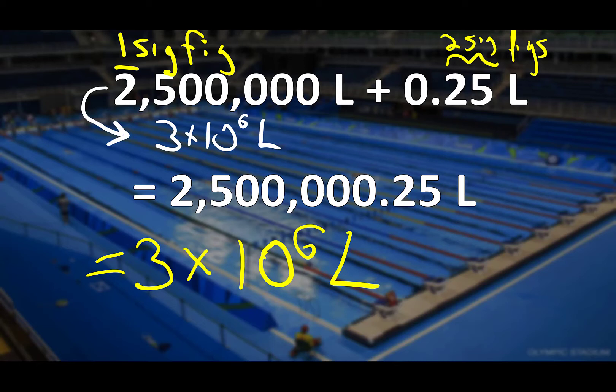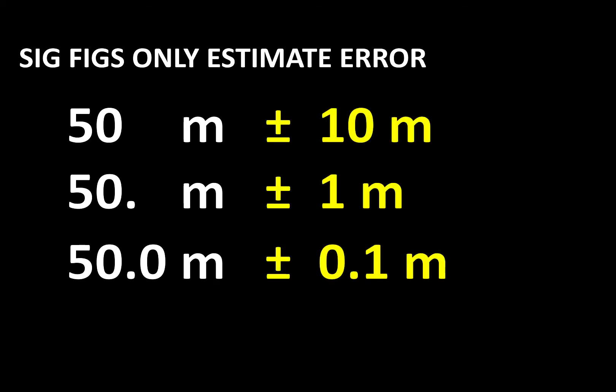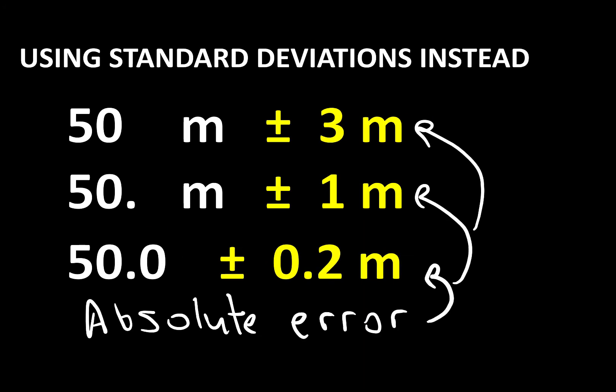Significant figures are just one way of expressing the error in a measurement. What a significant figure is really doing is expressing error like a standard deviation — the number always assumes plus or minus one in the last significant place. For example, 50.0 meters has the last zero as significant, so we express an uncertainty of ±0.1 meters. But the error could actually be any number; these express the absolute error, and there are rules for adding, subtracting, and multiplying these numbers together.